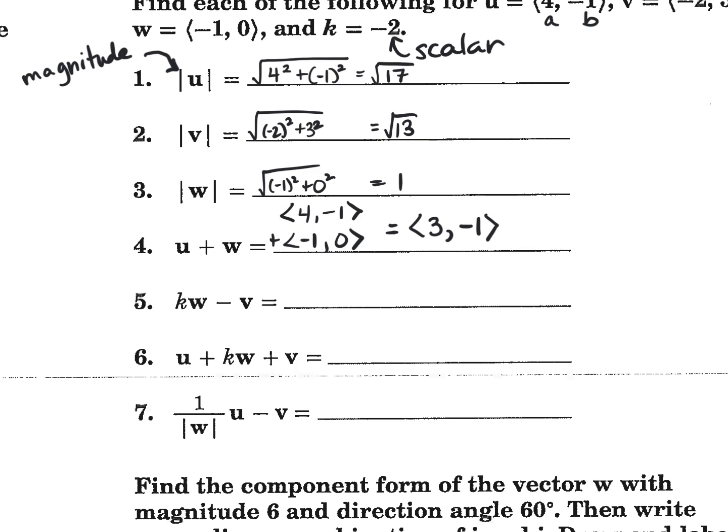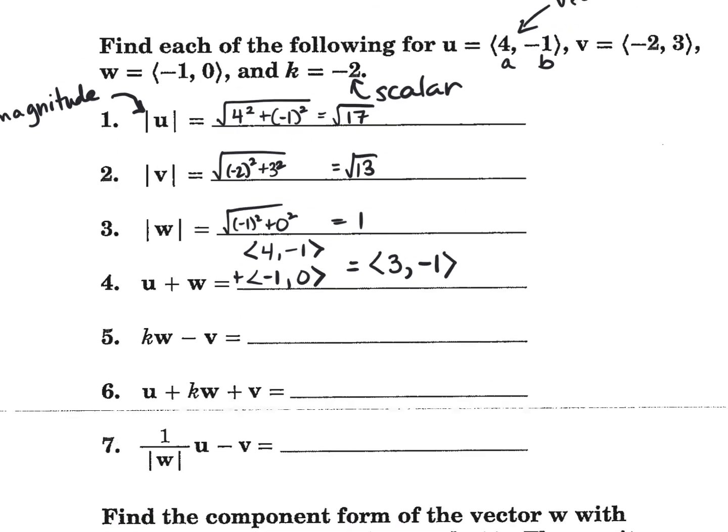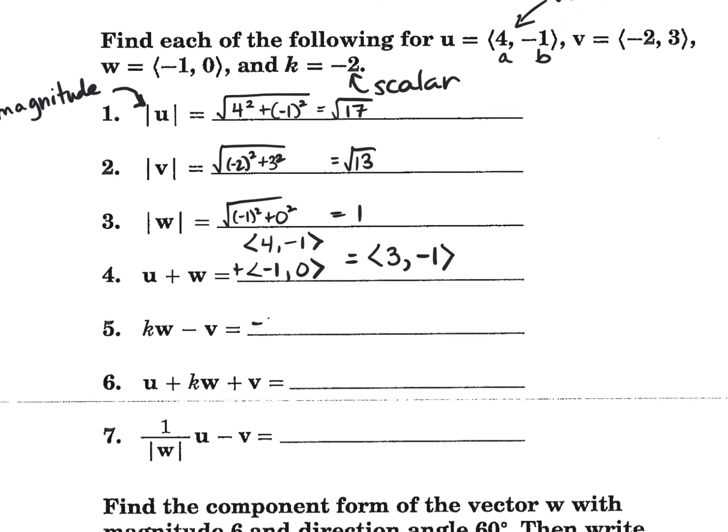All right, so what about kw minus v? How would we do that? How would we do kw first? Negative 2 times W. And then we're going to subtract V from it, which would be what? Okay, so what would this be? It's just distributive property, isn't it? So this becomes what? 2, 0, and then plus, and this just distributes 2, doesn't it? 2, negative 3. Okay, so what do we get when we finish adding that together? Yeah, 4, negative 3.